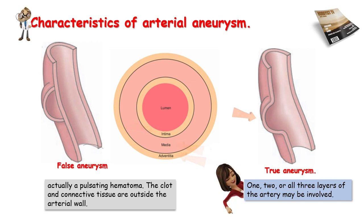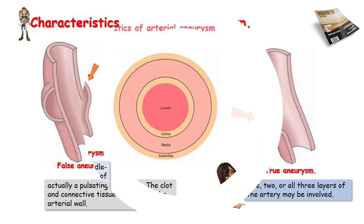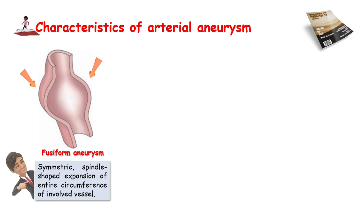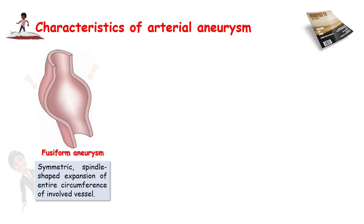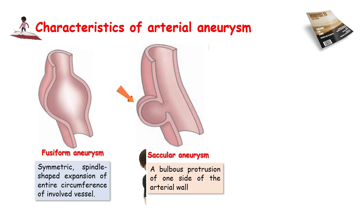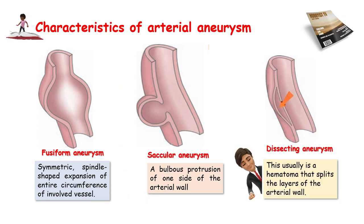Generally, true aneurysms are fusiform or saccular in shape. A fusiform-shaped aneurysm bulges or balloons out on all sides of the blood vessel. A saccular-shaped aneurysm bulges or balloons out on only one side. A fusiform aneurysm refers to one with a circumferential ballooning shape. An aneurysm is classified as such when the vessel wall balloons to more than 50 percent of its normal diameter. If an entire arterial segment becomes dilated, a fusiform aneurysm develops.